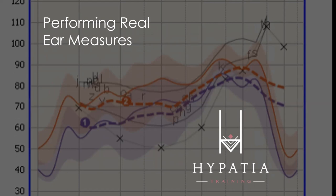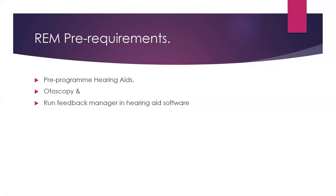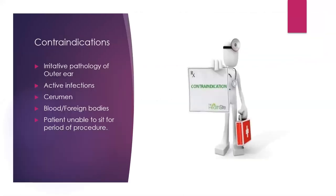The process for performing REM: you have to make sure that you pre-program your hearing aids, use a toscopy to check the condition of the ear canal, and run a feedback manager in the hearing aid software. Feedback manager stops the hearing aid from whistling, but you want to make sure it doesn't cut out too much of the sound the hearing aid can give.